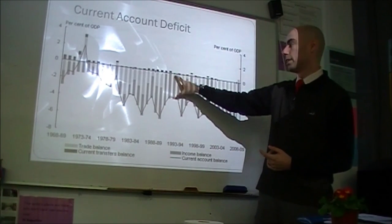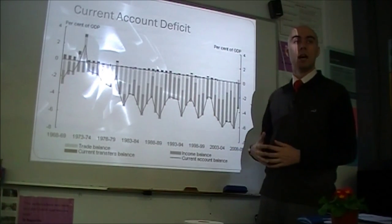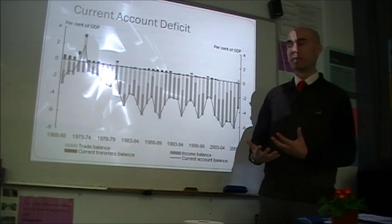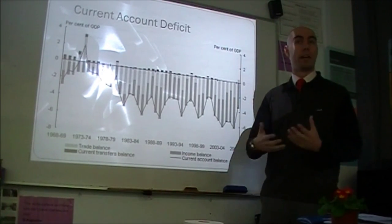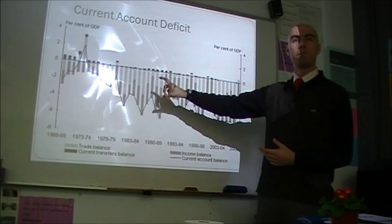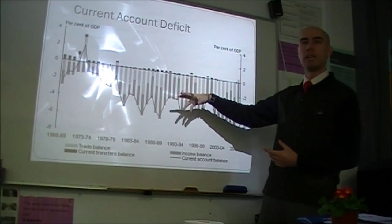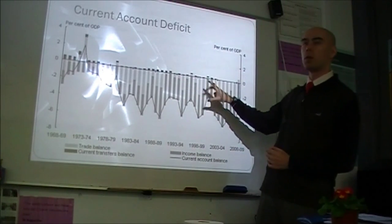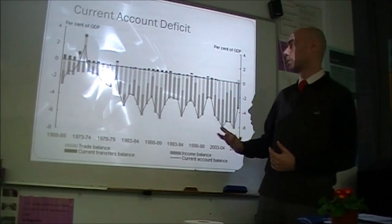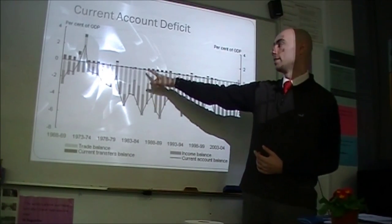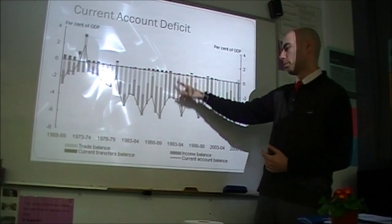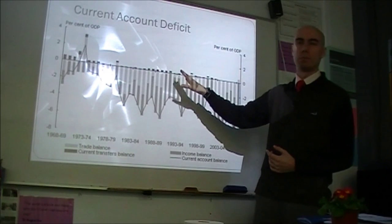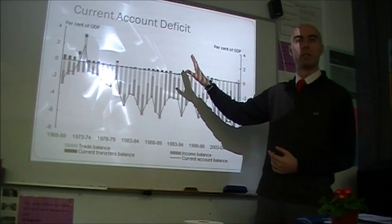If you look at the dark section here, that is the net incomes — or what we now call net primary income — interest and dividends on net foreign equity and net foreign debt. That's been roughly 3%; it doesn't go up or down very much. The dark section up the top is net current transfers, and it's very small — we can almost ignore it.